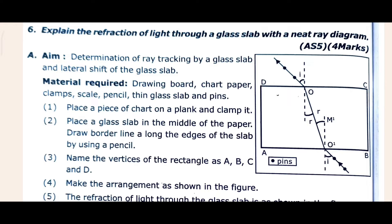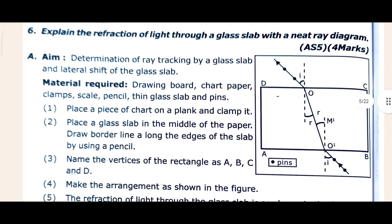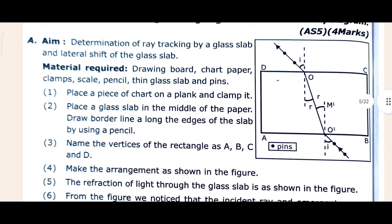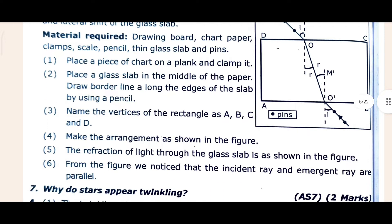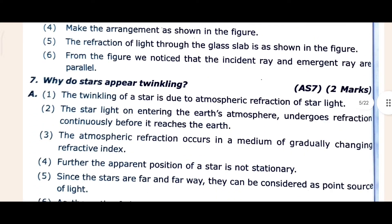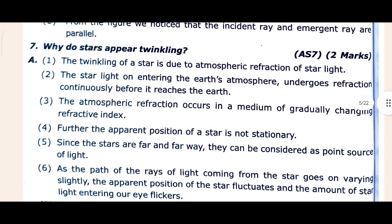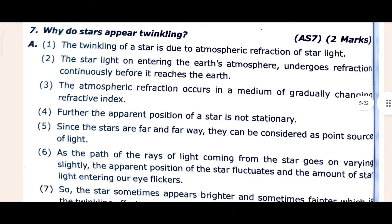That's the fifth one — explain the formation of mirages. Then the sixth one: explain the refraction of light through glass slabs with a neat diagram. I hope that's clear. Come to the seventh one: why do stars appear twinkling? The answer is given here for why it happens.